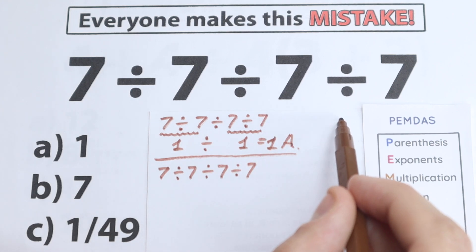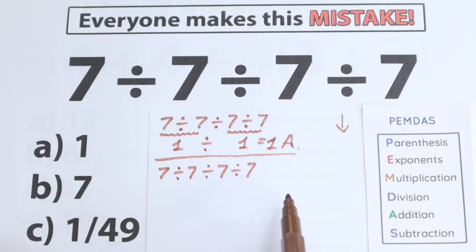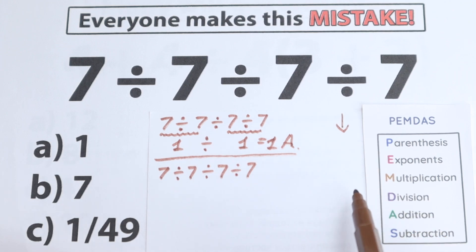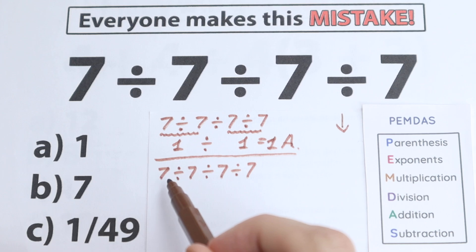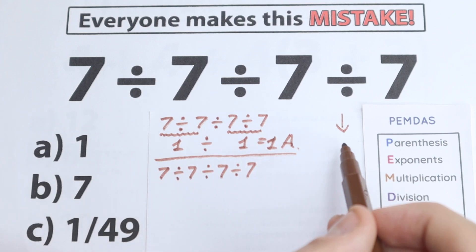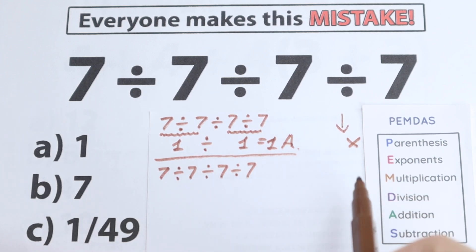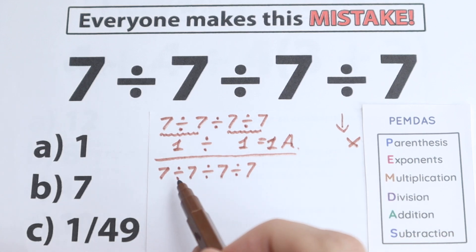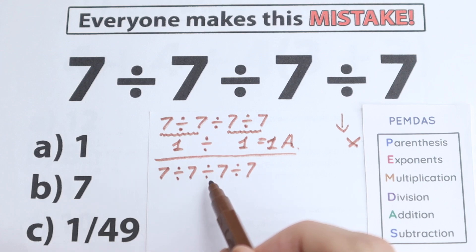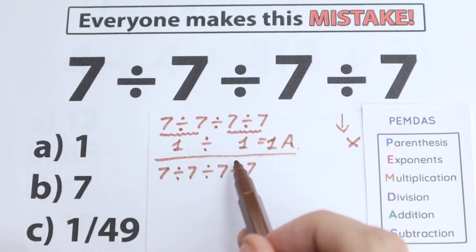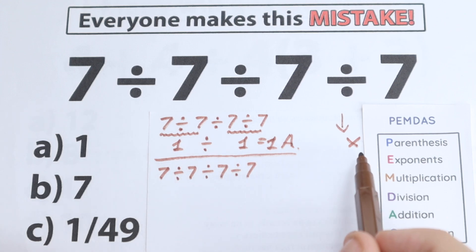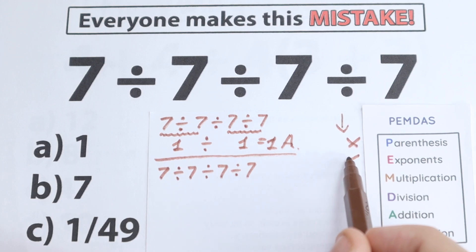PEMDAS works from the top to the bottom. The first step is Parentheses — let's look: we don't have any parentheses, so we skip this part. The next step is Exponents — I don't see any exponent here; we don't have any cubes, fourth powers, or seventh powers, just regular integers — so we skip this step as well.